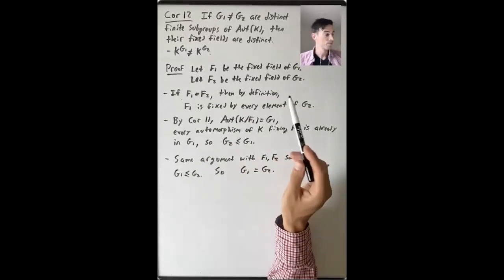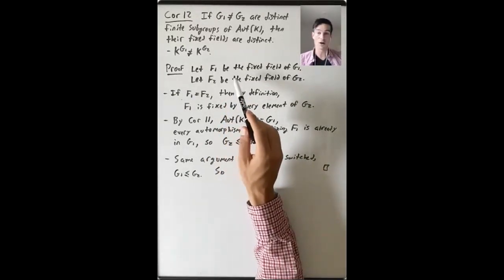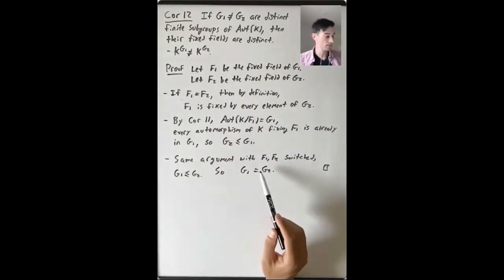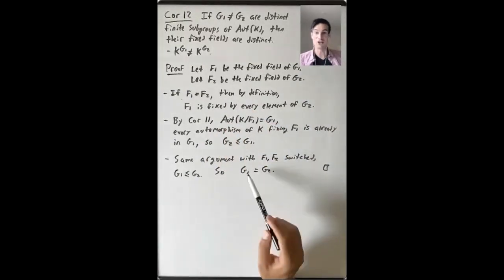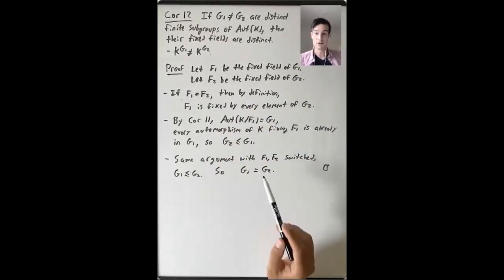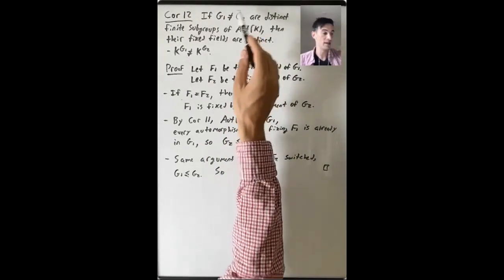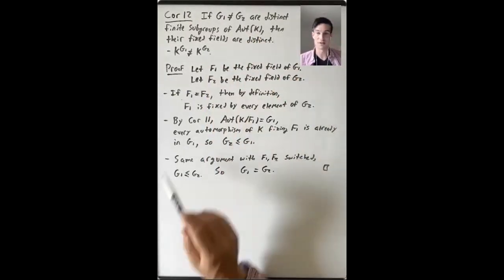So what have we proven? If these two fixed fields are the same, then G1 and G2 are the same. Therefore, if G1 and G2 are distinct, then the fixed fields are distinct.